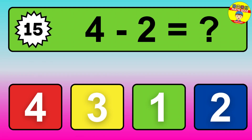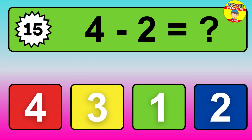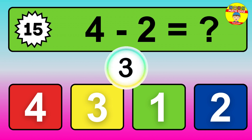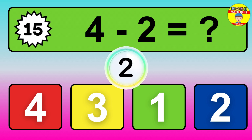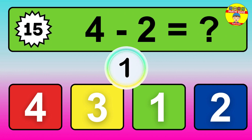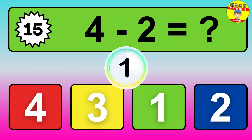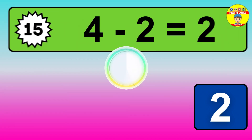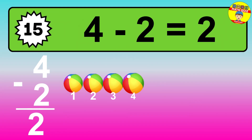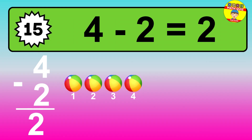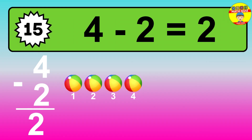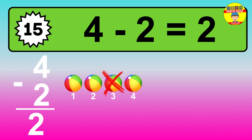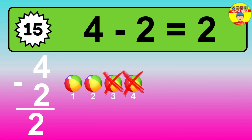Question 15: 4 minus 2 equals what? The answer is: 4 minus 2 is 2. Let's count it: 1, 2.